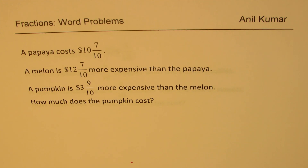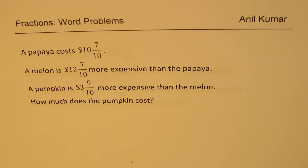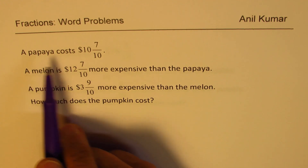One of the questions is: a papaya costs $10 7/10. A melon is $12 7/10 more expensive than the papaya. A pumpkin is $3 9/10 more expensive than the melon. How much does the pumpkin cost? Now let us see how to solve such questions.